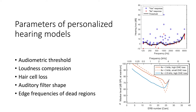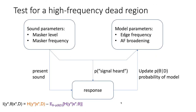A dead region is a region in the cochlea where all inner hair cells have died or have never been present. Its edge frequency is more complex to determine than a threshold because the responses do not directly give information about the model parameters. You see three psychophysical tuning curves for three example sets of model parameters. There are masker levels and frequencies that are a good choice to discriminate between those curves, so we should test them. There are also points where the curves overlap, so testing there gives us little information. The task in a dead region test is to tell whether a tone of fixed frequency and fixed level has been heard or not — we know the subject can hear the tone in quiet, but we mask it with a bandpass noise of fixed width. Given the sound parameters x (masker level and masker frequency) and the model parameters theta (edge frequency and broadening of the auditory filters), we can calculate the probability that the tone is heard. In each trial, we want to present the masker level and frequency most informative about the model parameters.